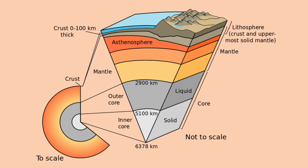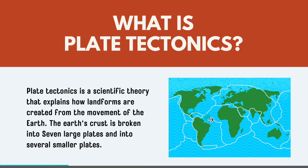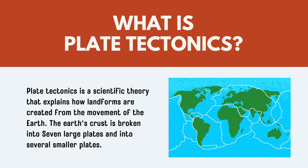The asthenosphere is the layer of Earth that lies below the lithosphere. It is a layer of solid rock where extreme pressure and heat causes the rock to flow like liquid. It is important because it is the force behind plate tectonic motion and continental drift. So, plate tectonics is a scientific theory that explains how landforms are created from the movement of the Earth. The Earth's crust is broken into seven large plates and several smaller plates.